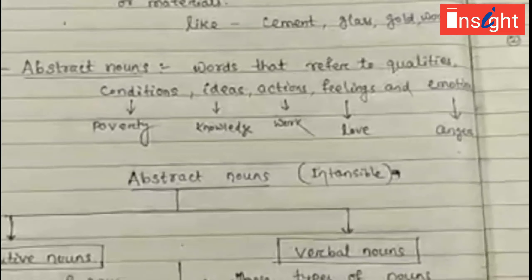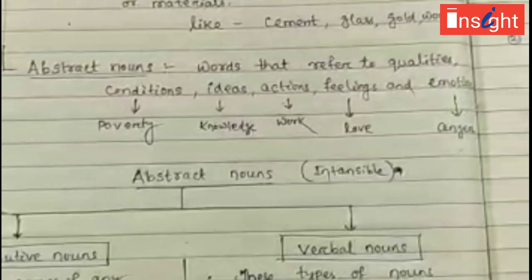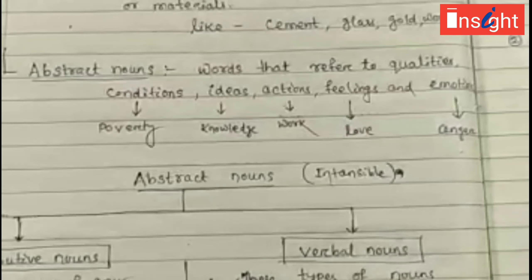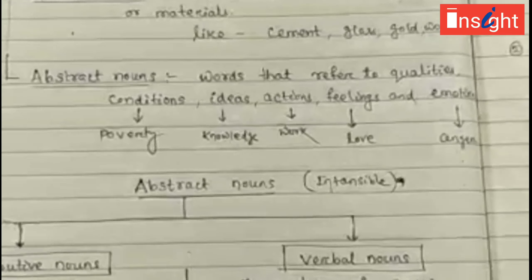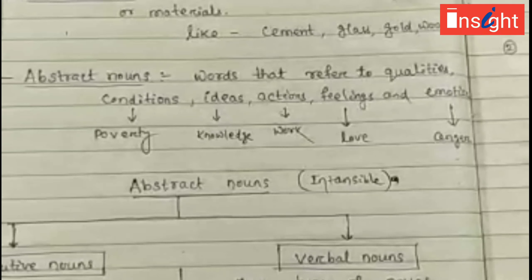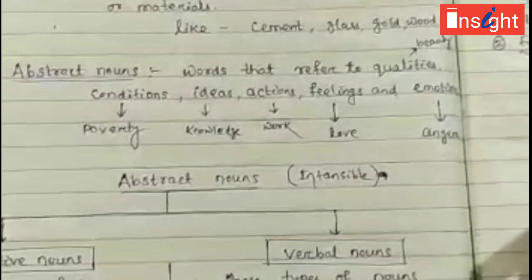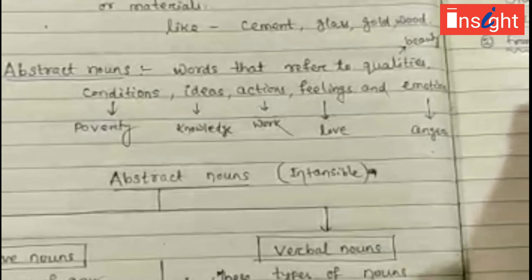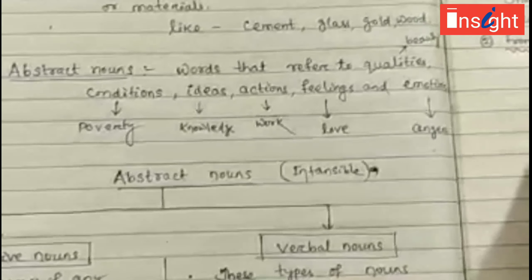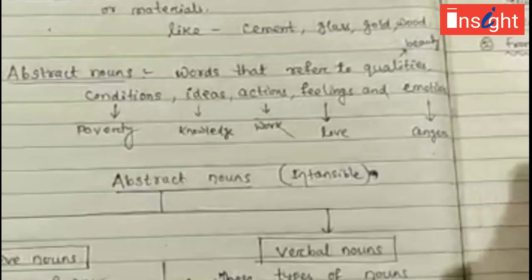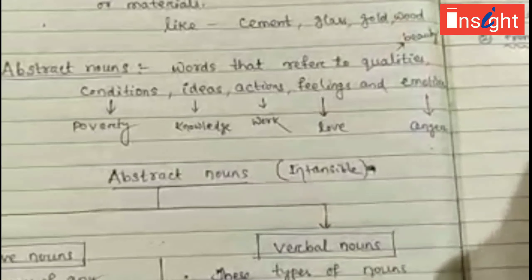Abstract noun refers to qualities, conditions, ideas, actions, feelings, and emotions. Quality examples: beauty. Condition examples: poverty — from the word 'poor'. Idea means knowledge. Action means work. Feeling examples: love. Emotion examples: anger — from angry; hunger — from hungry.